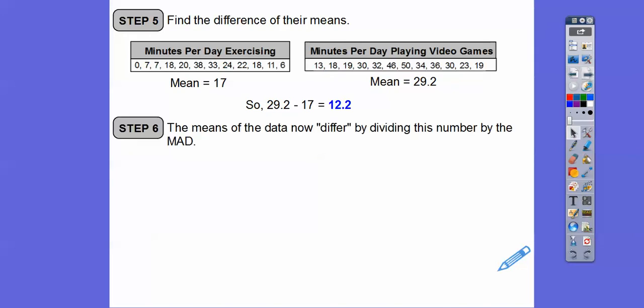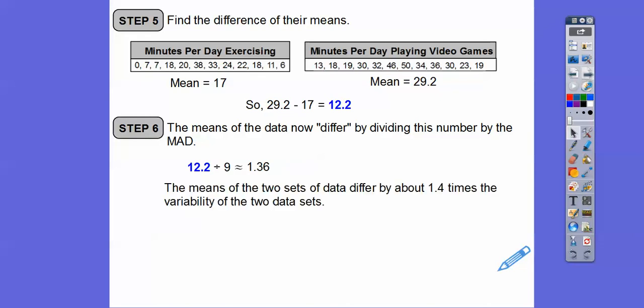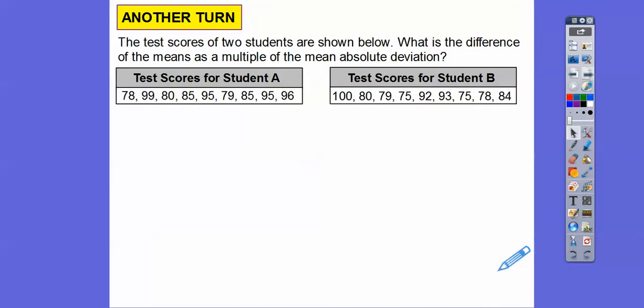To find how much the means differ as a multiple of the MAD, we divide the difference of the means by the MAD. The MAD was 9 on both. So 12.2 divided by 9 tells us that the means of the two data sets differ by about 1.4 times the variability of the two data sets. And if the MADs are the same, we need another measurement to measure how much their spread is — that's why we do this. All right, let's do it one more time.